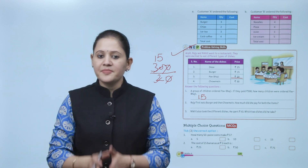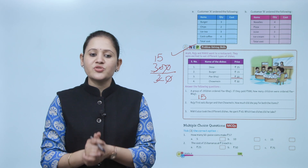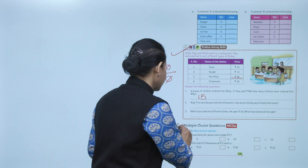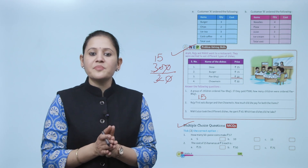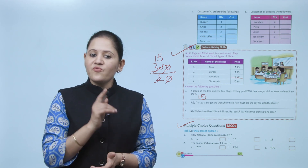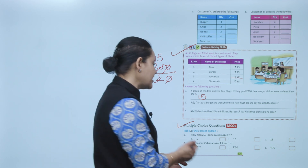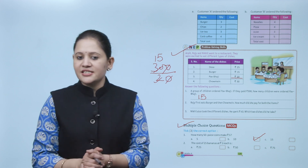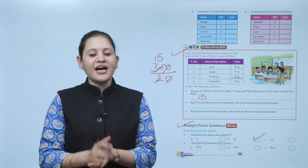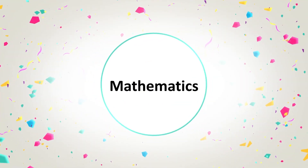Next is multiple choice questions. How many 50 paisa coins make 5 rupees? In 1 rupee there are 2 coins of 50 paisa, so in 5 rupees there are 10 coins total. Option B is the correct answer. Here we end the chapter — I hope you understood it well. Now you have to practice all the questions.